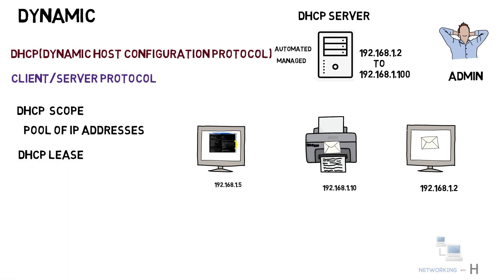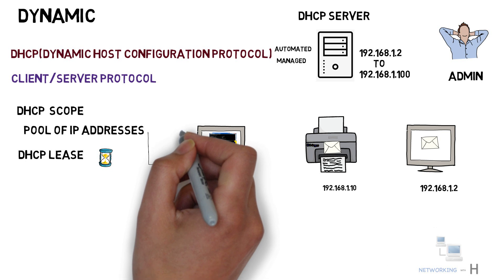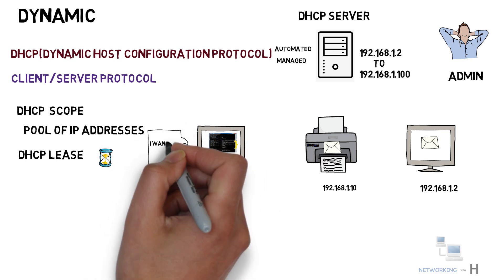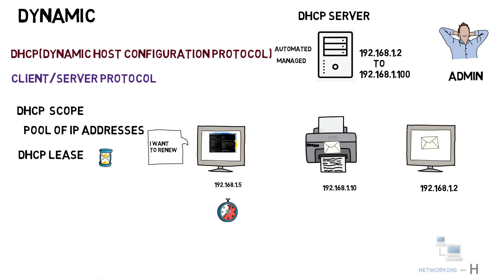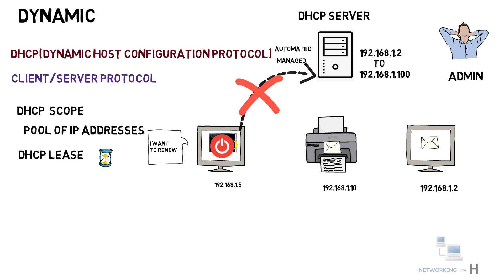DHCP adopts the concept of a lease in IP allocation. It sets a lease duration and allows the client to use the allocated IP address only during that set lease duration. If the client wishes to use the IP address longer, it must request the DHCP server for a renewal. If the device is disconnected or powered off, it releases the IP address, which then returns to the pool for reallocation.